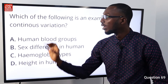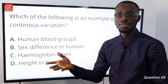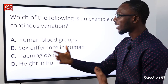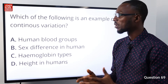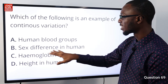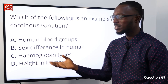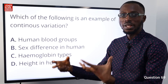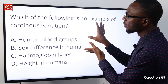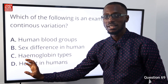Question 69: Which of the following is an example of continuous variation? Continuous variation is a characteristic that changes gradually over a range of values within a particular population. Sex differences in humans and hemoglobin type are discontinuous variations. But height or weight in humans are continuous variations. One example of continuous variation is height in humans, which makes option D very correct.